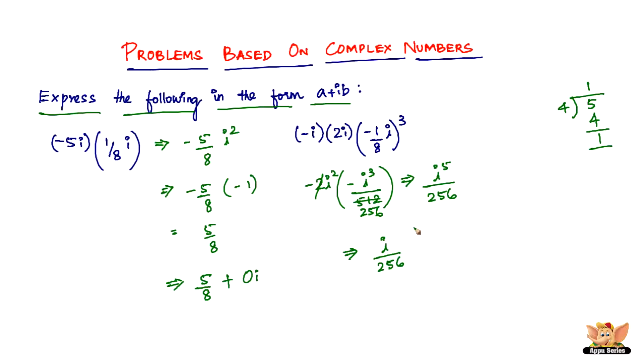This is the answer, but you have to write it in the form of a plus ib. Now a is 0, we do not have anything for a, so write it 0 plus 1 divided by 256 times i. This is the answer required for this problem.